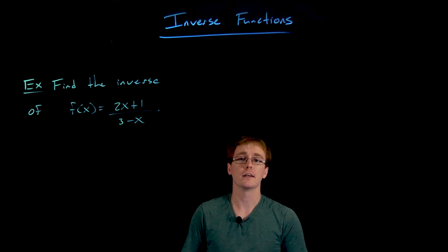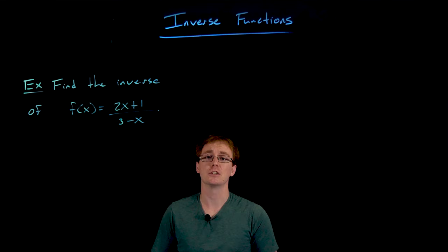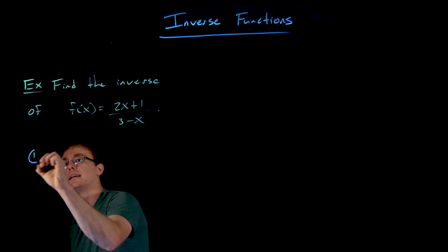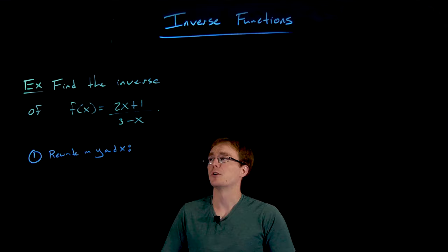And so we have a short little multi-step process that allows us to find algebraically the inverse equation for a function. The first step we always do in this process is rewrite the function in terms of y and x. And so all that means is we want to, for now, abandon this function notation and remember that all f of x really is, is our output or placeholder for y.